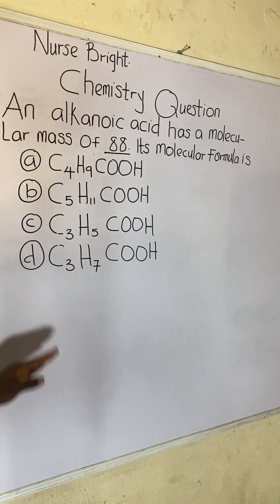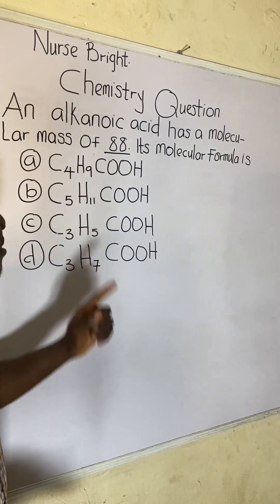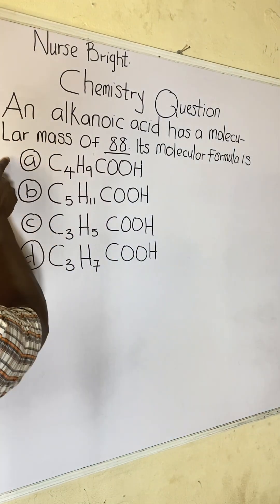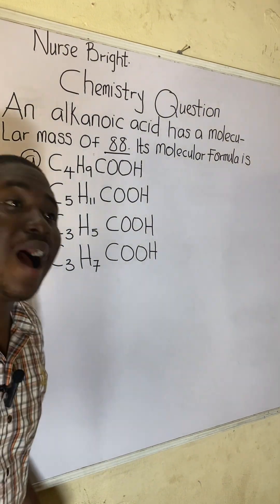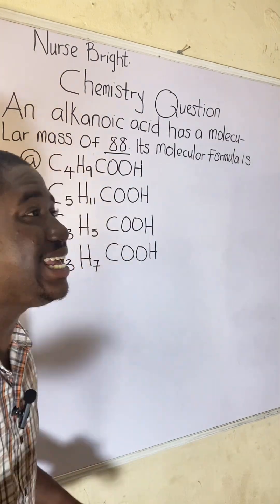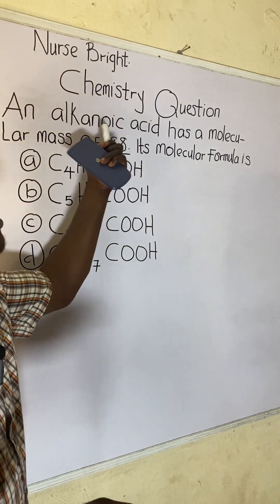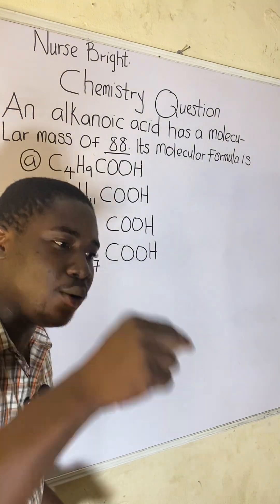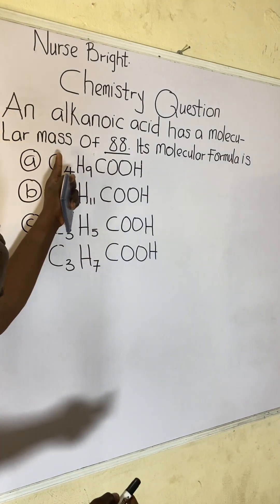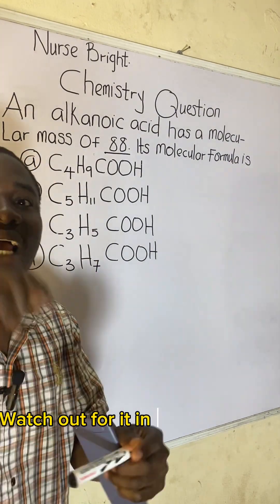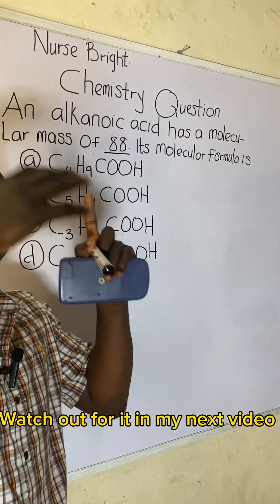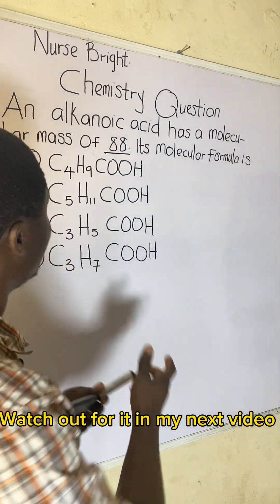The trick to get this answer is simply by calculating the molecular masses of the four options. After calculating the molecular masses of all four options, you check for the one that gives you exactly 88, as given in the question — that one is simply the answer. But let us also assume that we are not given options; I'm going to solve it in both formats.